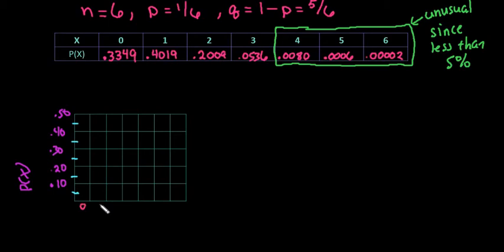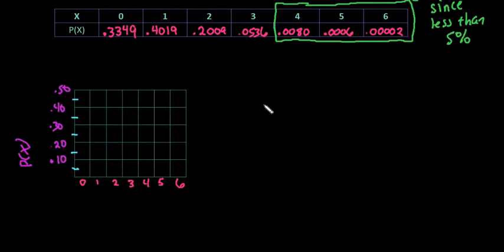Down at the bottom, you just put your possibilities of x. So I would just start with 0, 1, 2, 3, 4, 5, and 6. So essentially, all you're doing is labeling it. Your bin width happens to be 1 on this because you're just putting all of your possibilities of x. And then it's very important to include your labels.